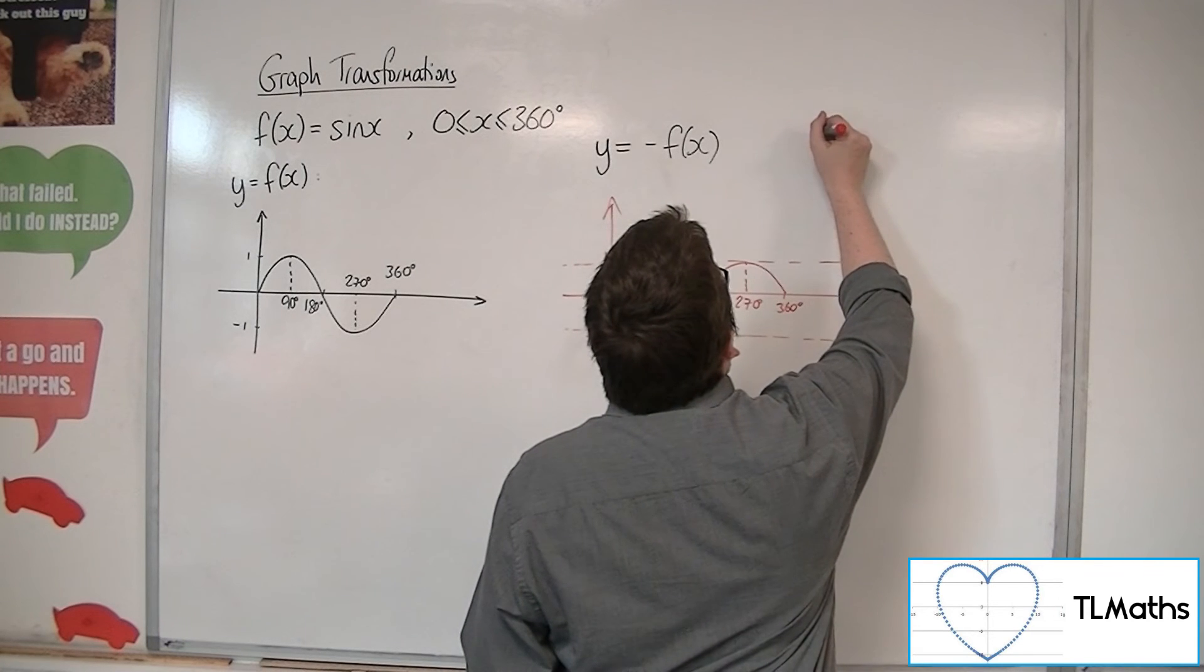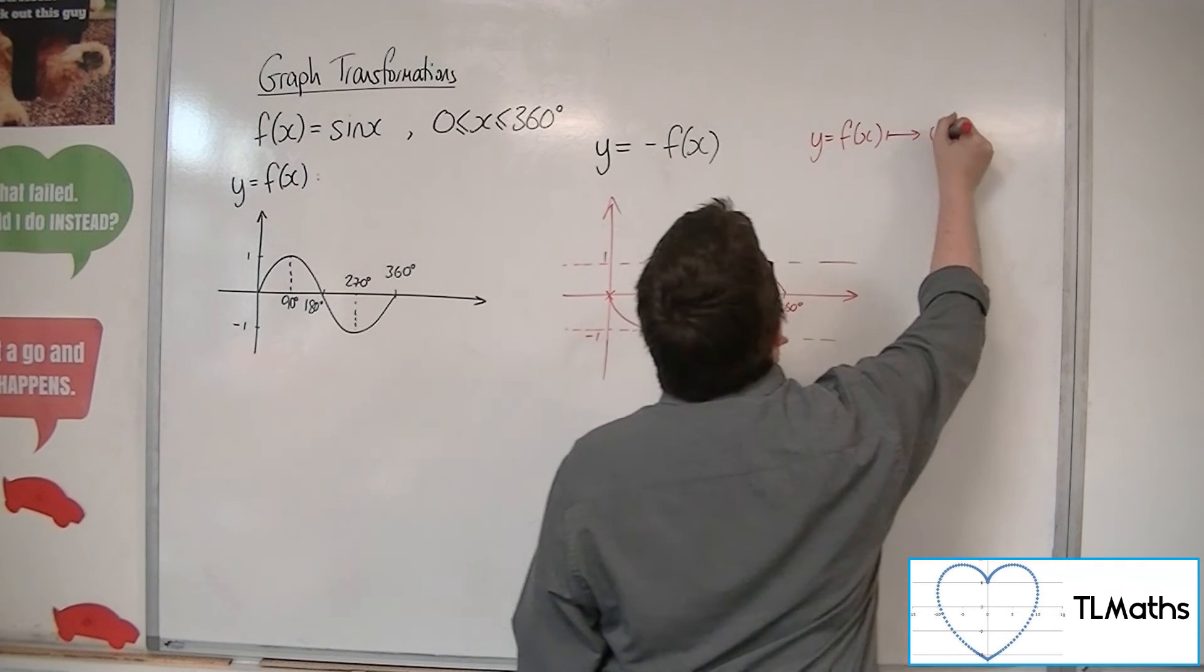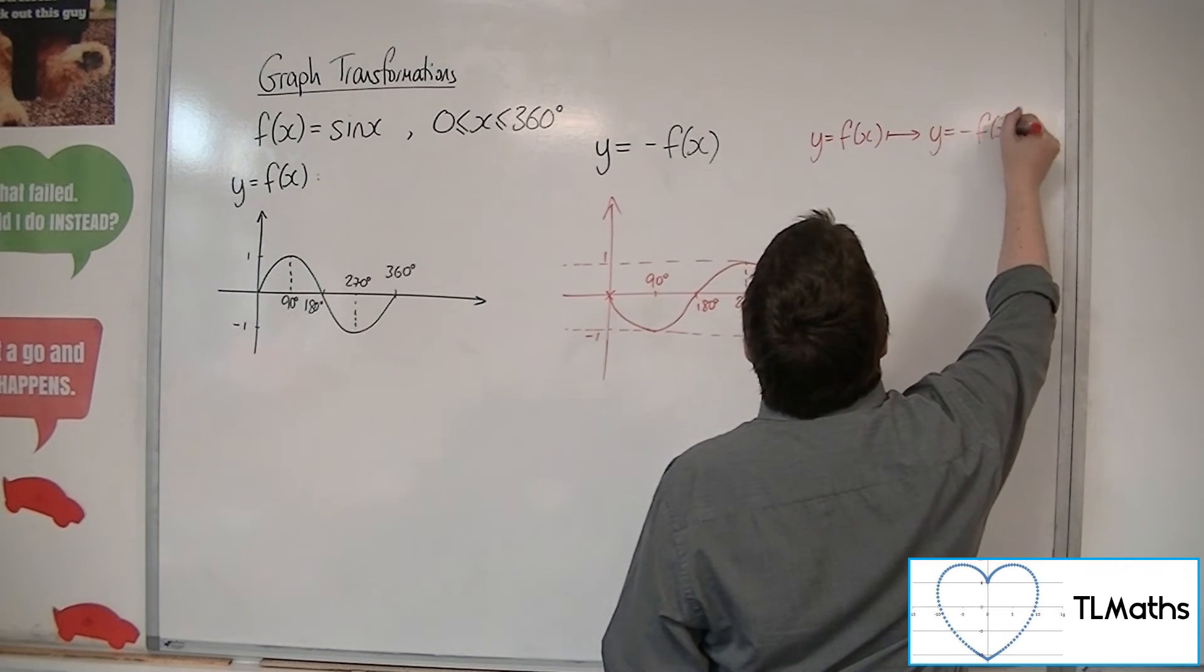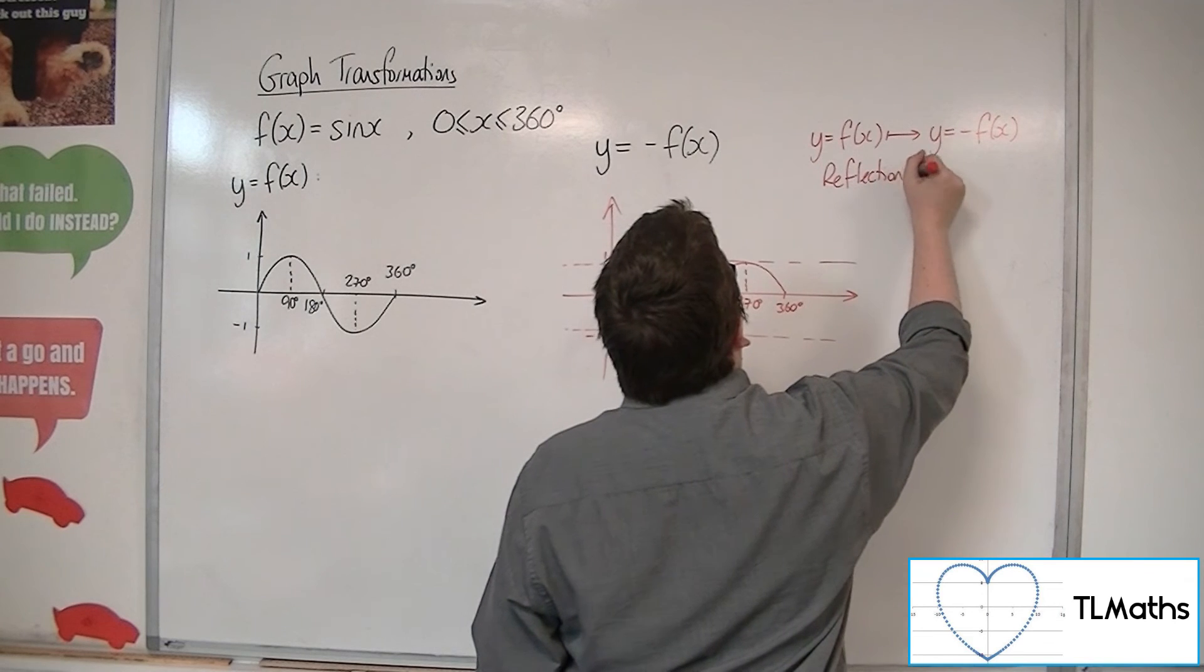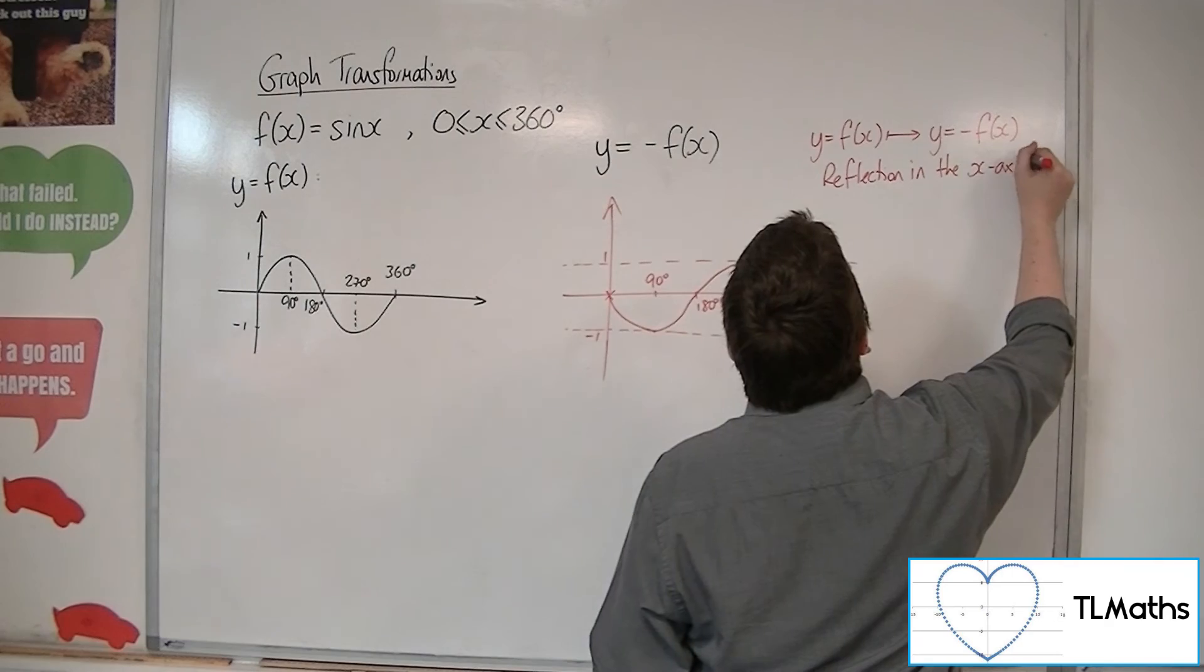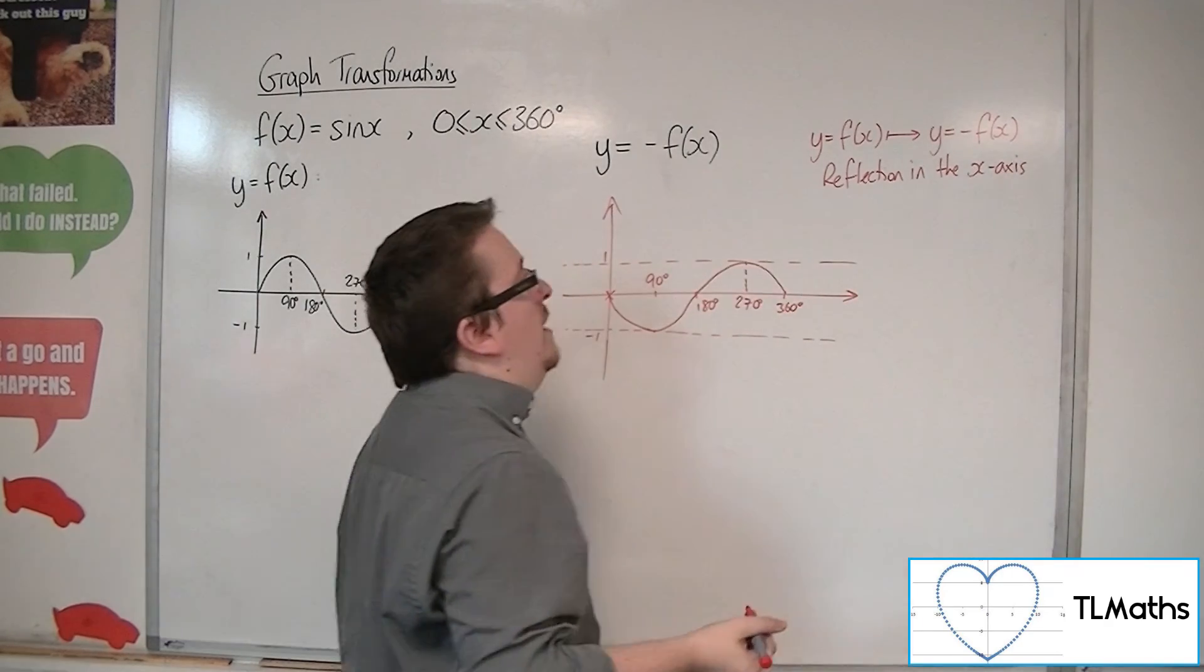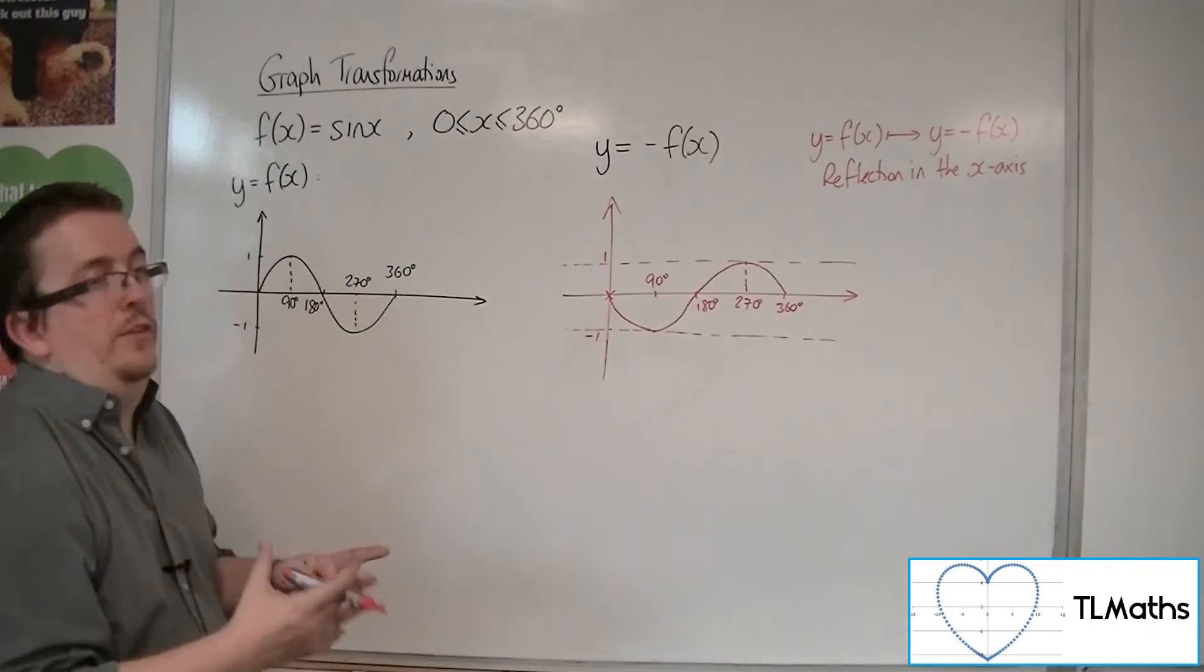OK, so when we say that y equals f of x is transformed to y equals minus f of x, this is a reflection in the x-axis, or in the line y equals 0. OK, so both of those are the same thing.